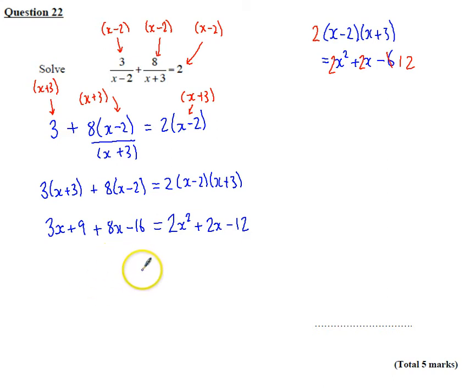And then let's just sort everything out. So here I've got, on the left-hand side, I've got 11x. And plus 9 minus 16 gives me minus 7. And here I've got 2x squared plus 2x minus 12.